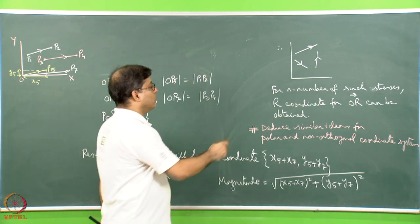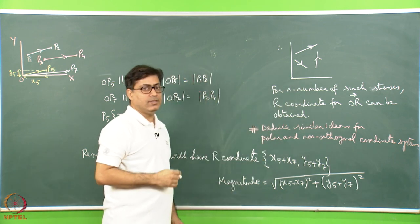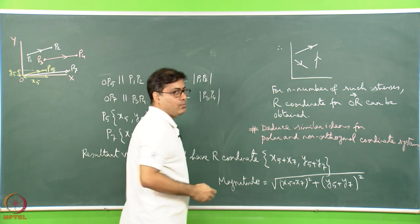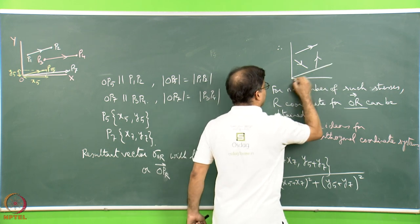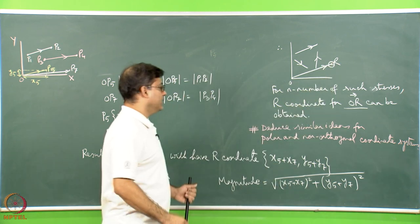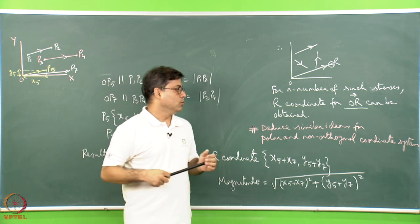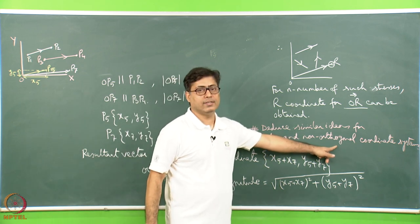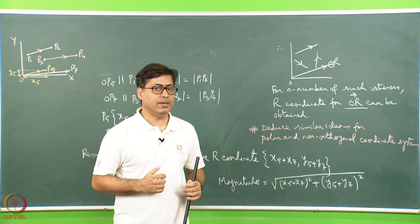For n such stresses — none passing through the origin but all assumed to act on it — the resultant OR can be found similarly. Students are requested to extend this idea to polar coordinates and non-orthogonal coordinate systems. This practice will make subsequent lectures easier.